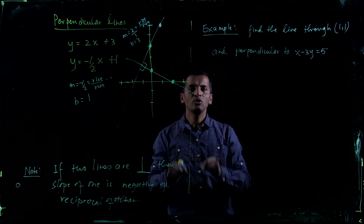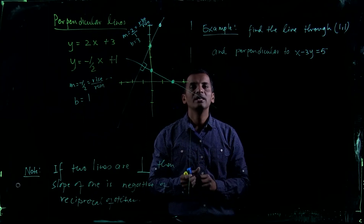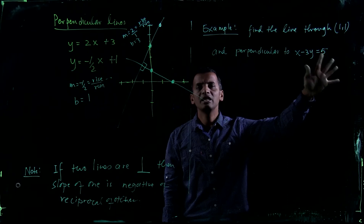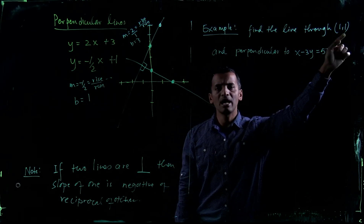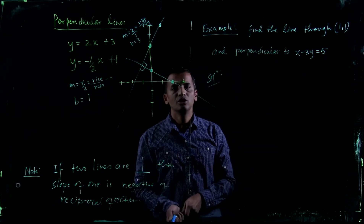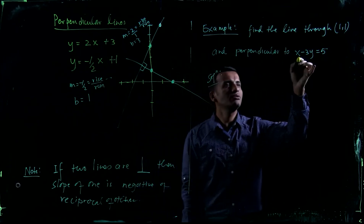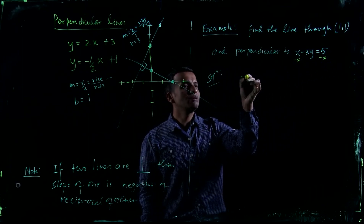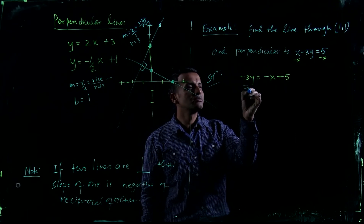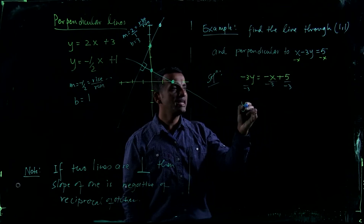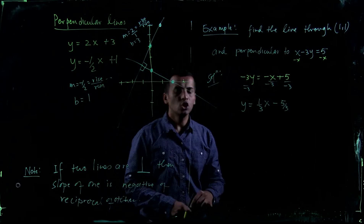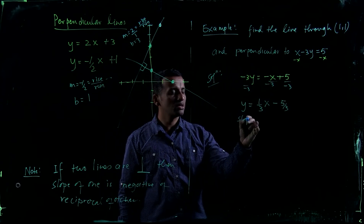Let's take an example. A line is given as x minus 3y equals 5, and you want to find the line perpendicular to it that passes through (1, 1). First, find the slope by solving for y: subtract x, divide by negative 3, and you get y equals one-third x minus five-thirds. So the slope of the given line is one-third.